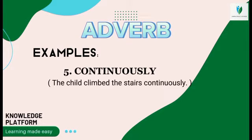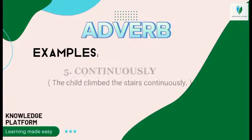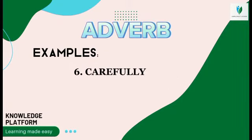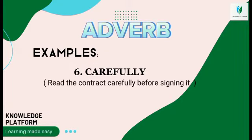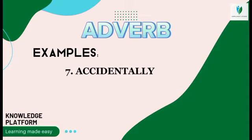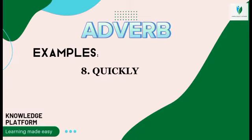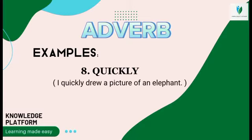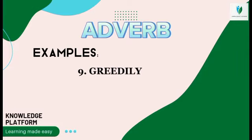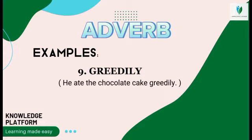Example six — carefully: 'Read the contract carefully before signing it.' Example seven — accidentally: 'She accidentally slipped down the stairs.' Example eight — quickly: 'I quickly drew a picture of an elephant.' Example nine — greedily: 'He ate the chocolate cake greedily.'